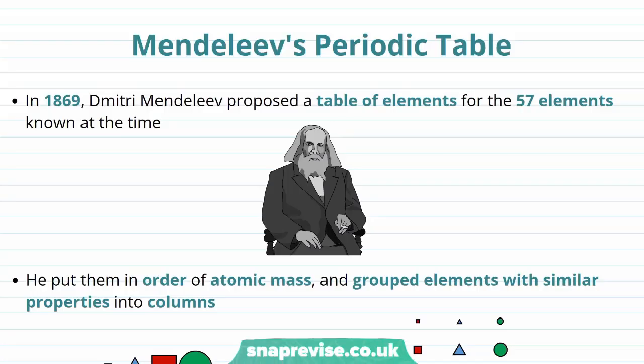The periodic table is the most important and useful tool in chemistry, and it gives you loads of information, the properties of the elements, and also what compounds they're likely to form in chemical reactions.